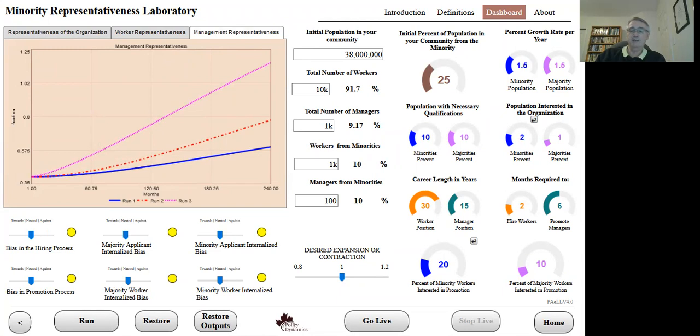You can see that there are many options you can experiment with in our model. We hope this model might give you insight into how to reach your diversity goals in your desired time.